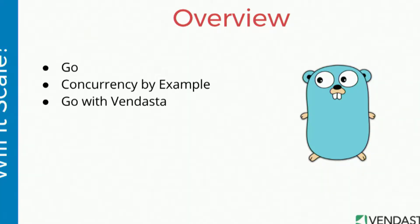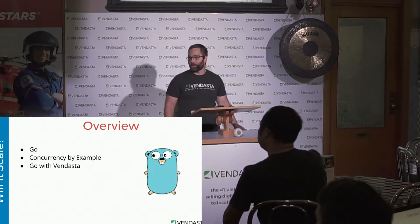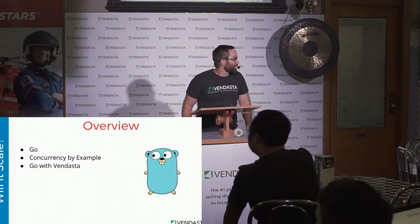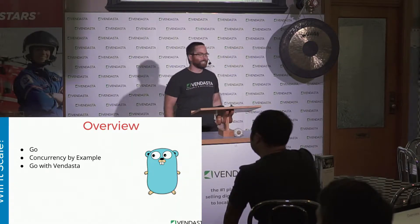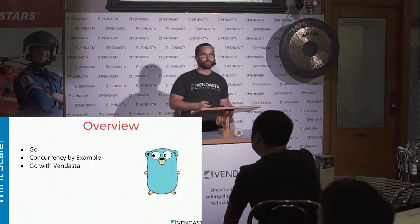Here's a quick overview of the talk. First, I'll introduce Go — where did it come from and why? Then we'll solve an interesting problem using Go and its concurrency primitives. And then we'll look at some of the performance benefits we've seen since switching to Go at Vendasta. This little guy on the right is the Go gopher, the language mascot, and he's going to be appearing throughout the talk.